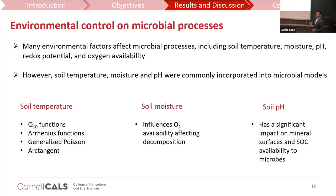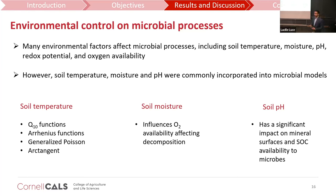Soil temperature was represented by Q10 function, Arrhenius function, generalized Poisson, and Arcturne. Soil moisture also plays an important role through the influence of oxygen: if soil is saturated, less oxygen is available to microbes and they will not be actively decomposing soil organic carbon. Soil pH affects mineral surfaces; at high pH, mineral surfaces will less actively absorb soil organic carbon, leading to less adsorption on mineral surfaces.